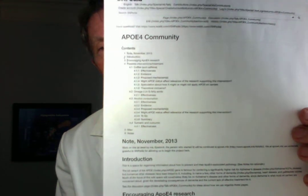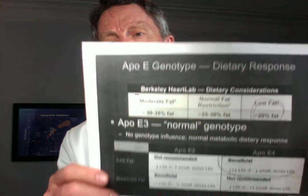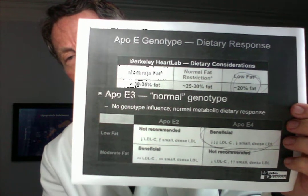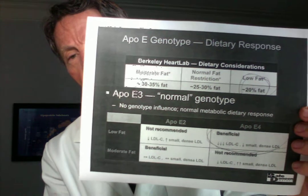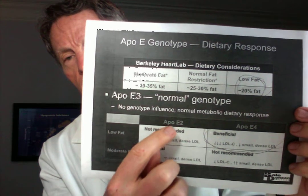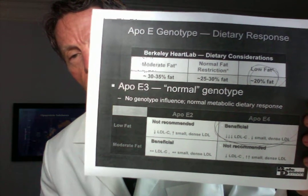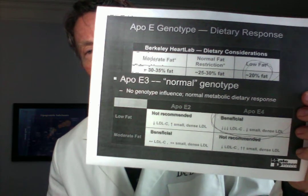We also talked about ApoE. The ApoE4 community has developed because of the huge increase in risk for dementia associated with ApoE4. We discussed the daily dietary impact: an ApoE2 individual can tolerate higher calories from fats, whereas an ApoE4 individual needs lower calories from fats — 20% or less — while ApoE2-2 can tolerate 30% or less.